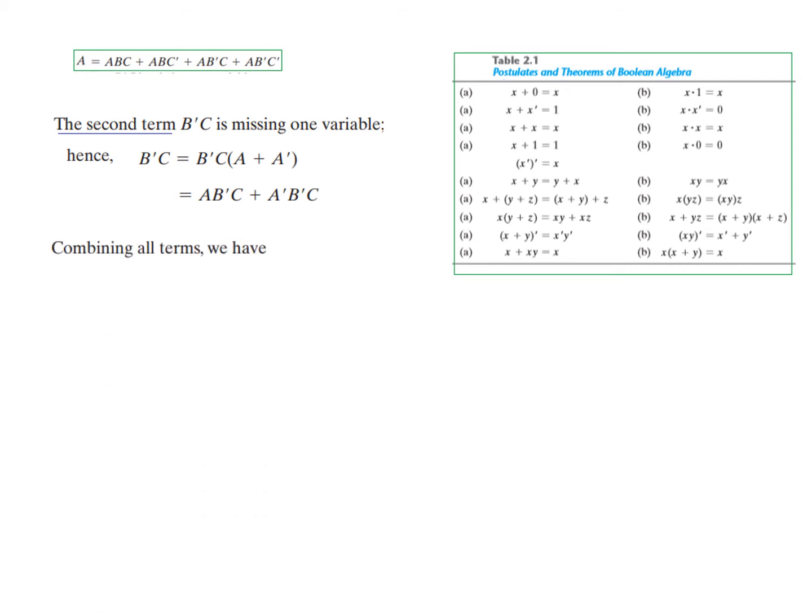And now we can add the two. So combining all the terms. We have for F is equal to A + B'C. We put the value of A from here. And we put the value of B'C here. So this is the value that we get all in terms of A, B, C.